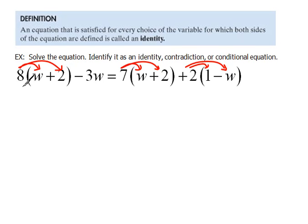So when we do that, we now have an equation that looks like 8w plus 16 minus 3w equals 7w plus 14 plus 2 minus 2w.